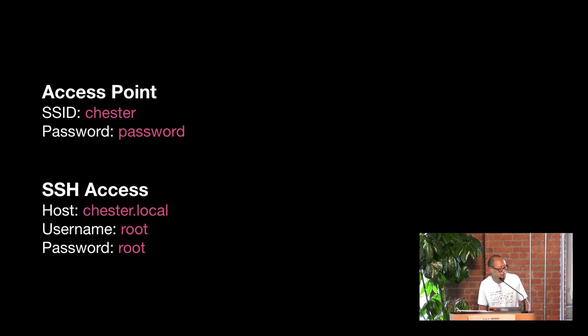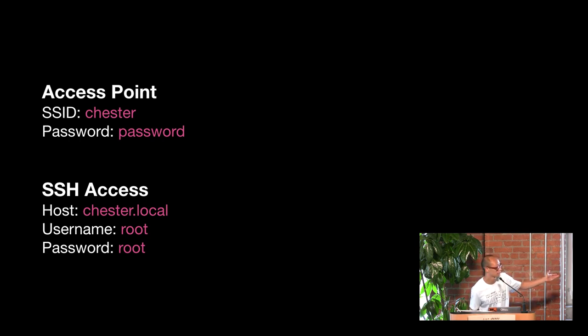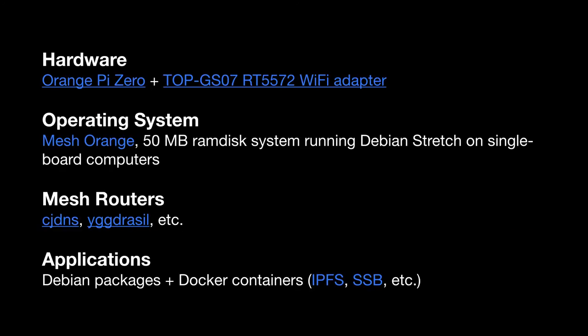I have some demo nodes here that I'll bring up during lunch. All you have to do is connect to the name of the node — one is Chester, another is Dundas, named after Toronto Metro stops — and then you can SSH into them and ping each other. I'm thinking about this as a platform where you can prototype different peer-to-peer apps or different mesh networking protocols. When new boards come out, you just make a new build target and create an image. So my question is: do you have any use for this?